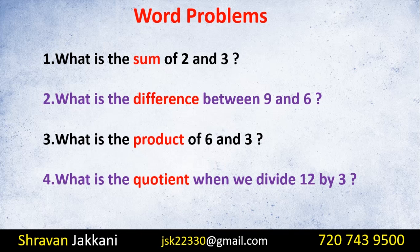What is the product of 6 and 3? We multiply 6 and 3. What is the quotient when we divide 12 by 3? We divide 12 by 3 and the answer is 4. The quotient is the result of division. We need to know these names — sum, difference, product, and quotient — to understand mathematical instructions.